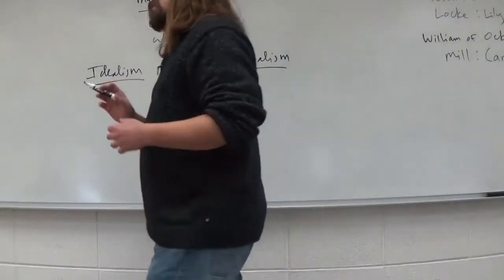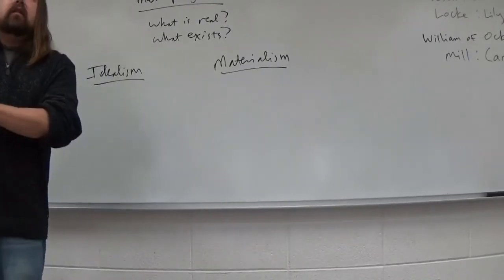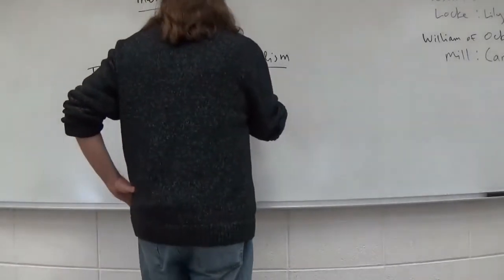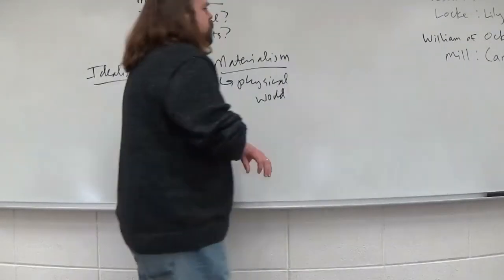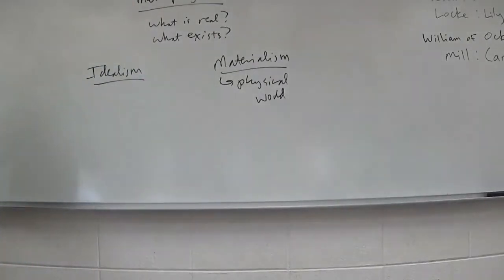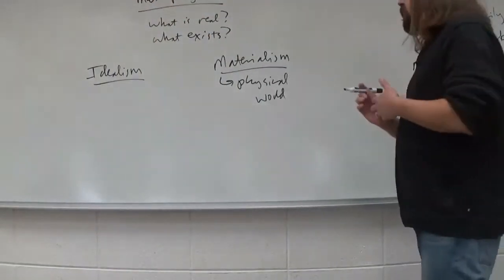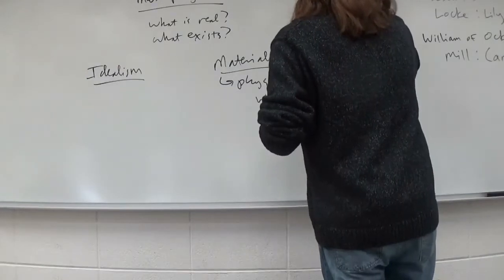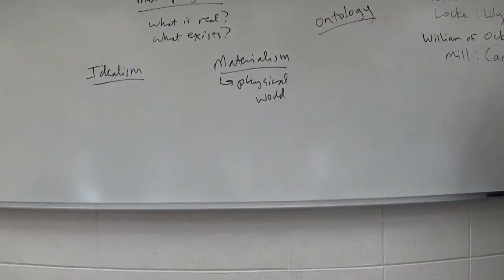A materialist thinks that what is most real is the physical world. What is most important is the study and categorization of objects in the physical world. So, a lot of materialists work using a process that's called ontology. Some of you probably ran across this word in your reading. Do any of you know what ontology means? Is it the study of like the human being?